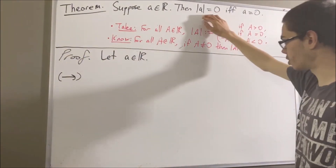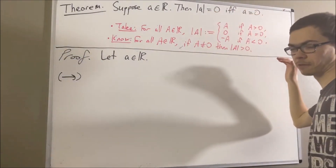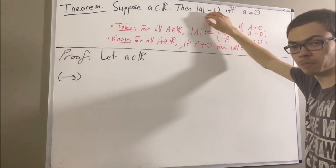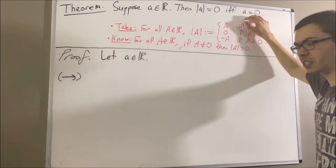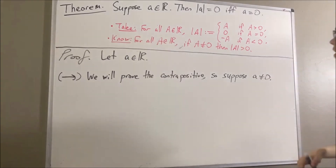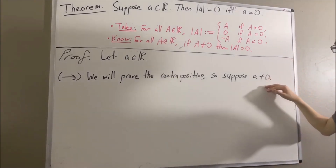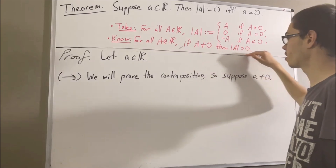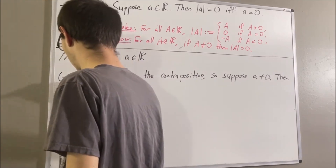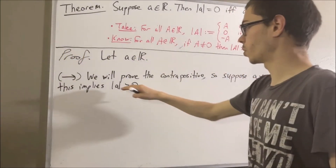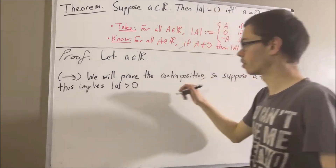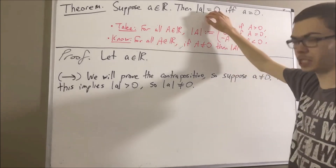To prove if the absolute value of a equals zero then a equals zero, we're actually going to prove the contrapositive. That is, we're going to prove: if a is not equal to zero, then the absolute value of a is not equal to zero. So suppose a is not equal to zero. Well, by the previously proven fact, we have that the absolute value of a is greater than zero, meaning the absolute value of a is not equal to zero.